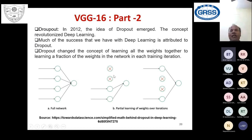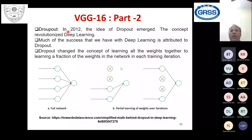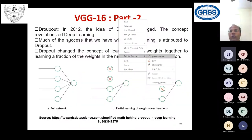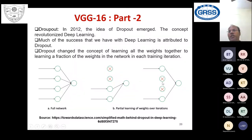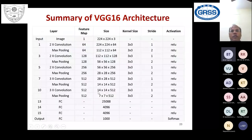Dropout is used to prevent overfitting in neural networks. During training, randomly selected nodes become inactive (set to zero), meaning they don't contribute during that training step. This regularization technique forces the network to learn more robust features.